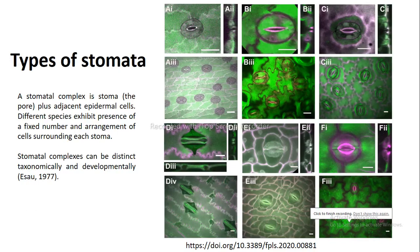In this video we are going to understand about the types of stomata. A stomatal complex is composed of the stoma — that is the pore — as well as the adjacent cells like guard cells or subsidiary cells. Stomatal complexes can be distinct taxonomically and developmentally, and different species exhibit a fixed number of cells with a fixed arrangement of those cells around the stoma.